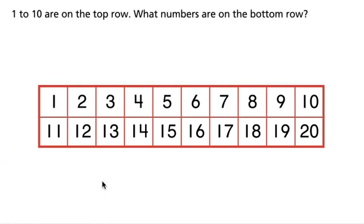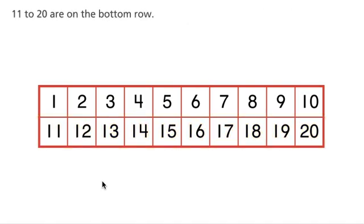1 to 10 are on the top row. What numbers are on the bottom row? 11 to 20 are on the bottom row.